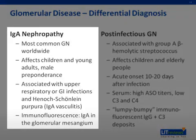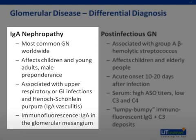Immunoglobulin A nephropathy is the most common form of primary glomerulonephritis worldwide. Immunofluorescence reveals IgA in the mesangium of all glomeruli. The pathogenesis is still poorly understood, but an association with upper respiratory and gastrointestinal infections is frequent.